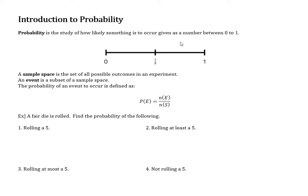Probability is the study of how likely something is to occur, and it's given as a number between 0 and 1. There's some vocabulary we use to help describe probabilities. If a probability is 0, we say it's impossible. If the probability is 1, we say it's certain — like the probability that the sun rises tomorrow is 1.